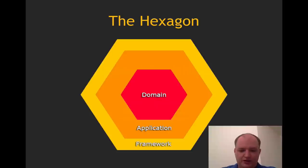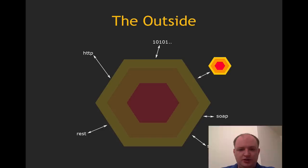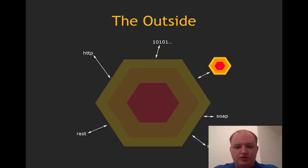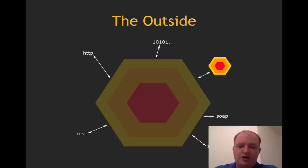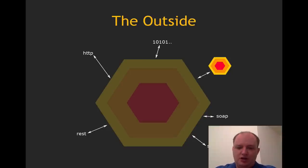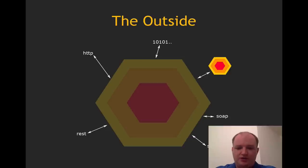Now let's look at the outside. Our system would remotely communicate with any number of remote systems in any kind of format, like REST, HTTP, Binary, SOAP, SQL, or it could also communicate with other hexagonal systems. For example, especially if you have a big system, you can split your system up into different hexagonal architectures that communicate remotely, which is a great way of enabling greater teams to split up and to work in parallel on different parts of the system.